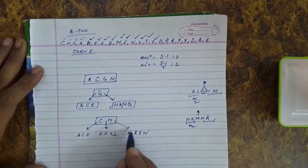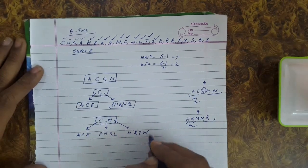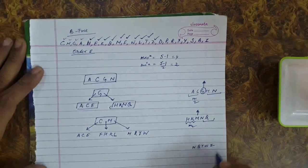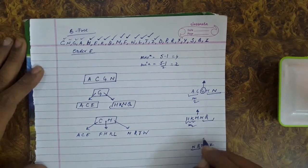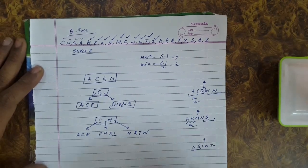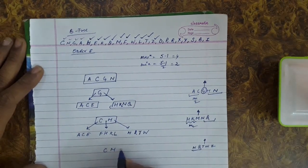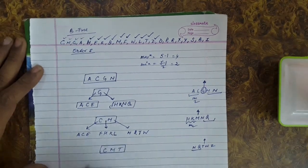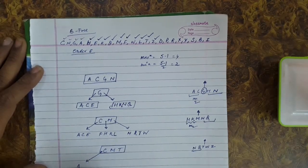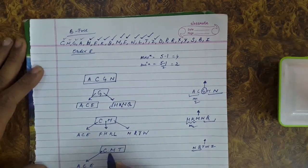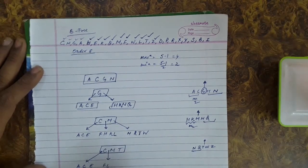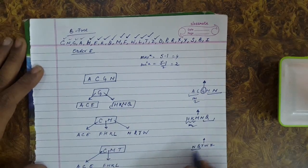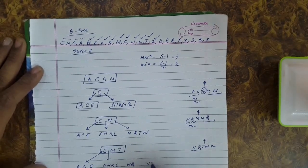Then Z, greater than M — inserting Z here causes a maximum violation. N, Q, T, W, Z: the m/2 key stays on the left, the median T is sent upwards. So C, M, and T are now in the root node. Towards the left we have A, C, E; then F, H, K, L; and two new nodes N, Q and W, Z.